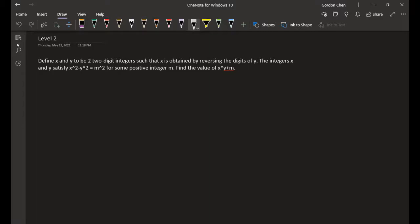So there are two two-digit integers x and y such that x is obtained by reversing the digits of y. So x is 10a plus b, then y is 10b plus a.